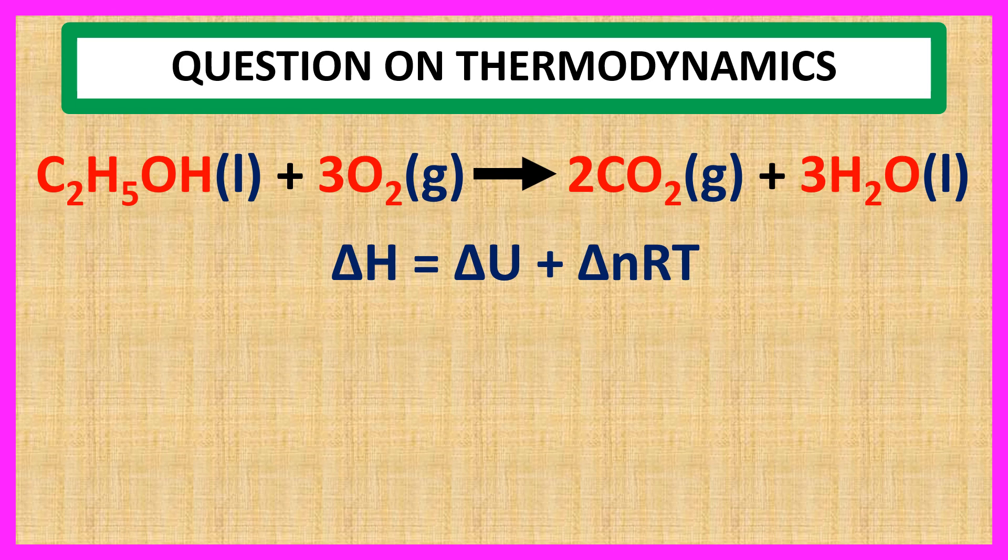where del N is equal to difference in number of moles of gaseous products and reactants. So, we first calculate the value of del N. del N is equal to 2 for 2 moles of gaseous products CO2 minus 3 for 3 moles of gaseous reactant O2, which equals minus 1.